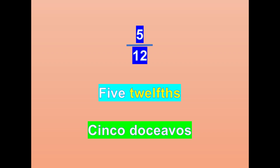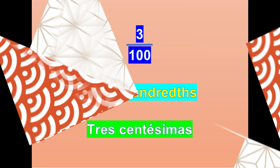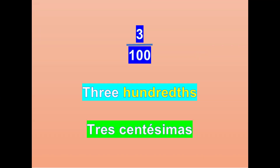Fraction. Para las fracciones, en el primer número — que sería el numerador — lo decimos con los números cardinales. Y la parte de abajo, o sea, el denominador, lo decimos con los números ordinales: first, second, third, etc. Five twelfths. Four sevenths. Three hundredths.